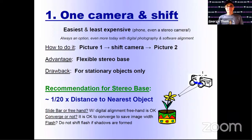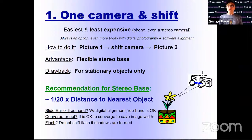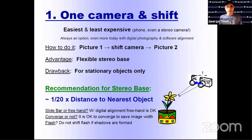Method number one is the mother of all stereo methods: using one camera and shift. It's the easiest and least expensive method because everybody has one camera, which can just be your phone. Today with digital photography and software alignment, it's even easier to do. Basically, you take a picture, shift the camera, and take another picture. You can take anything from macro to hyper-stereos. One drawback is that nothing should move between the two pictures.